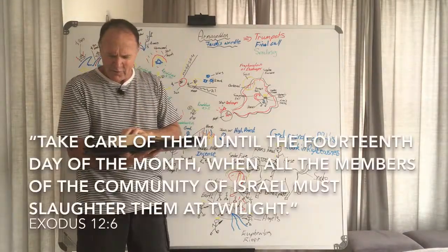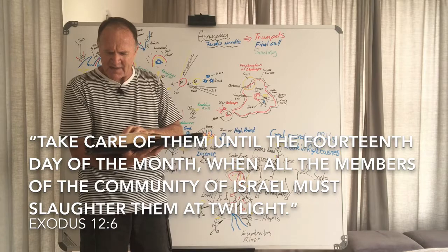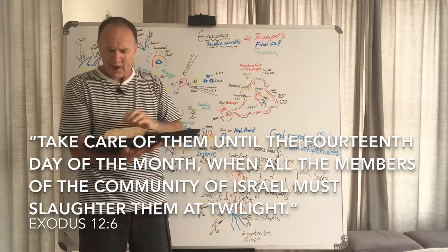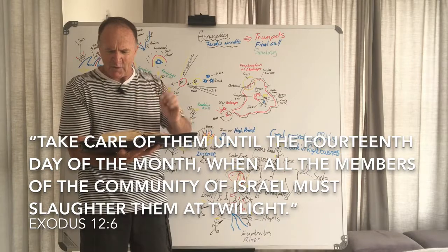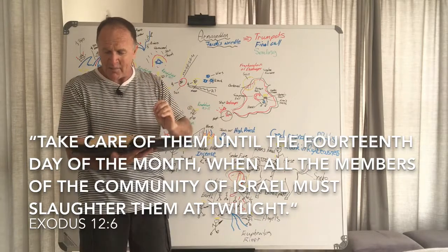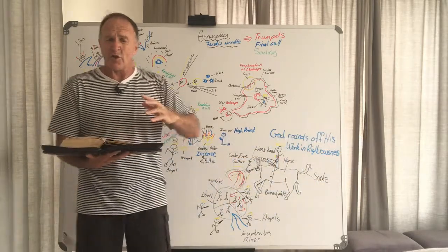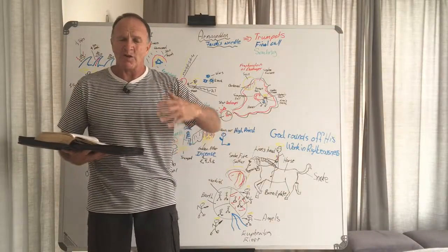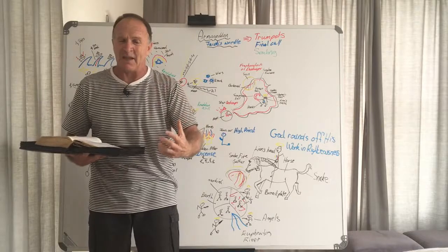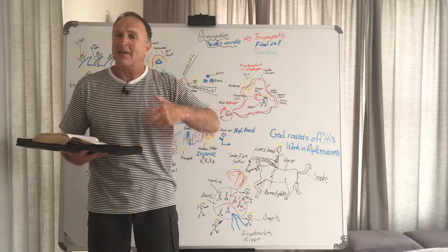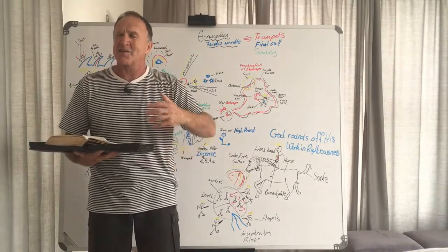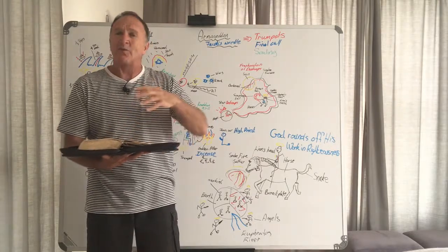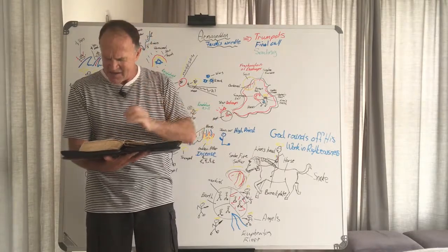But it doesn't just stop there. It says on the 14th day in verse 6, take care of them until the 14th day of the month when all the people of the community of Israel must slaughter them at twilight. So it means now that we don't just have a living lamb. We are to take the lamb that we believe in and slay it, symbolizing that Christ would die for our sins and that we recognize this.